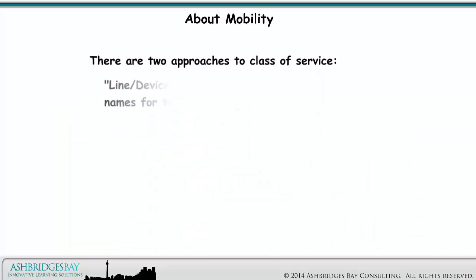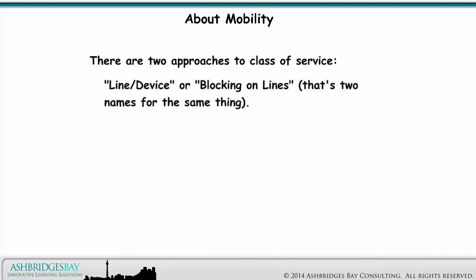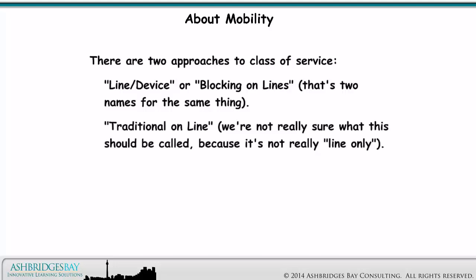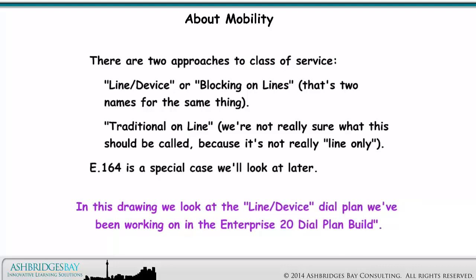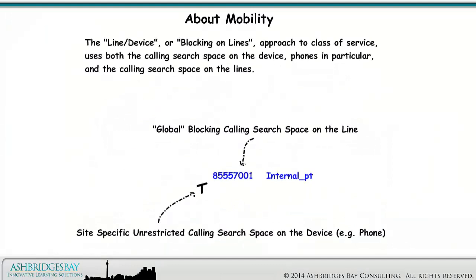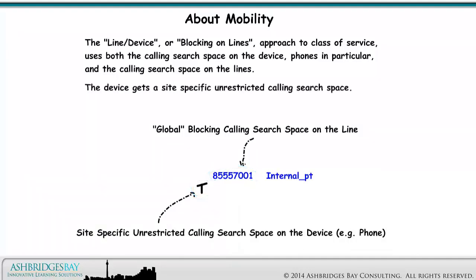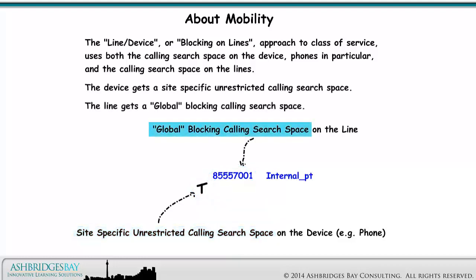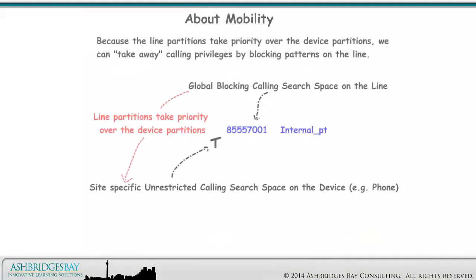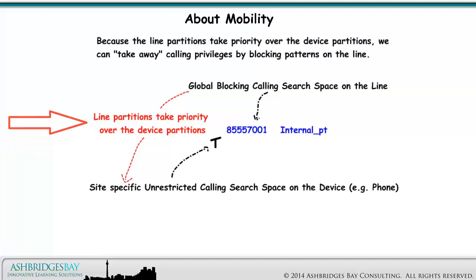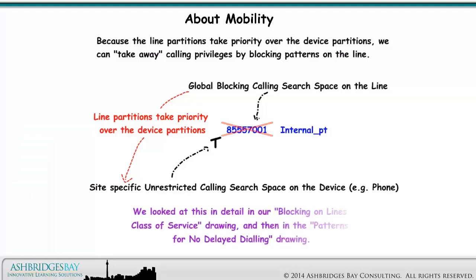There are two approaches to class of service: line device, or blocking on lines — two names for the same thing — or traditional on line. In this drawing, we look at the line device dial plan we've been working on in the Enterprise 20 dial plan build. The line device approach uses both the calling search space on the device and the calling search space on the lines. The device gets a site-specific unrestricted calling search space; the line gets a global blocking calling search space. Because the line partitions take priority over the device partitions, we can take away calling privileges by blocking the patterns on the line.